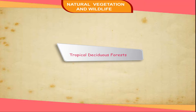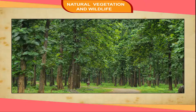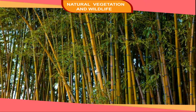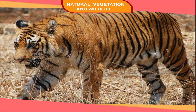Tropical Deciduous Forests. These are the forests of regions having moderate temperature and rainfall. The rainfall is less than in evergreen regions, but the temperature remains high. To conserve water, the trees shed their leaves. They are found in monsoon regions of Asia, in Central America, and Northern Australia. These forests are not very dense and trees are of medium height. Trees with high commercial value include teak, deodar, bamboo, rosewood, and eucalyptus. Wildlife includes elephants, tigers, leopards, and rhinoceros.